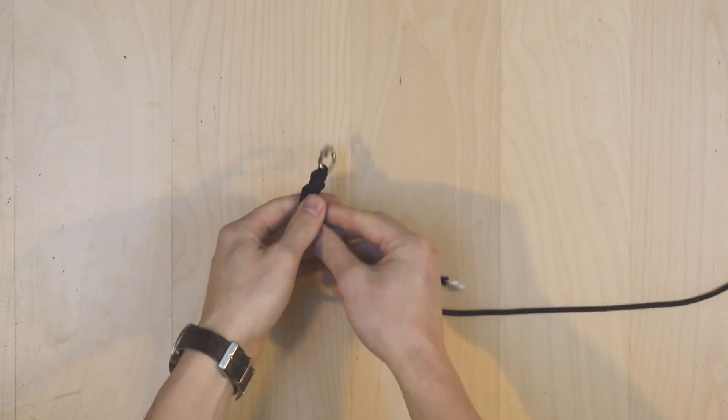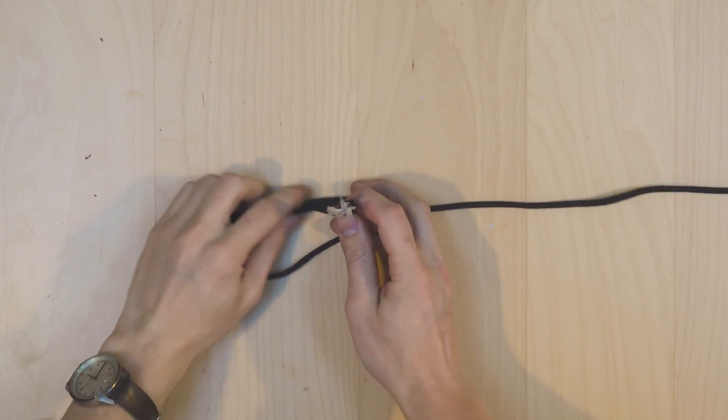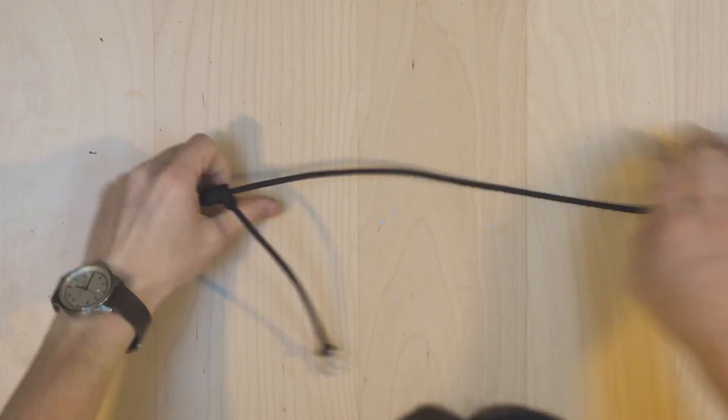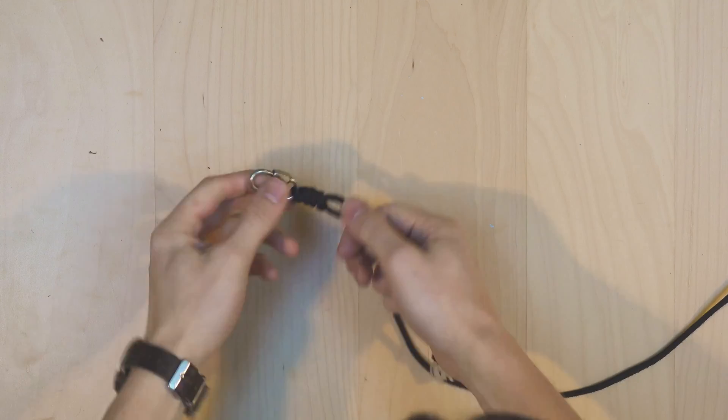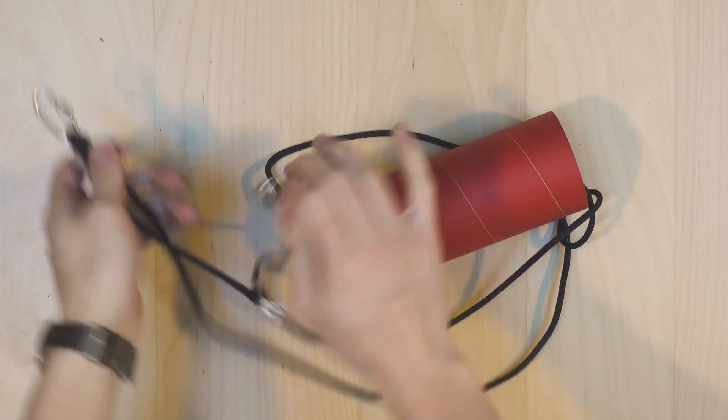These knots are quite strong and should hold the test of time well. I've used them on several rockets and have yet to have them fail me. The next step is to do the same on the opposite end of the shock cord. We'll tie the same basic knot here, again attached to this little link. At this point, you should have a link on either end of your piston.